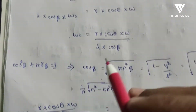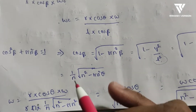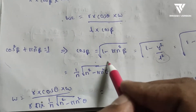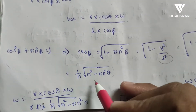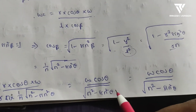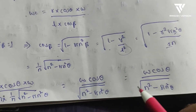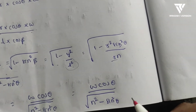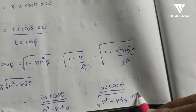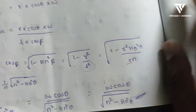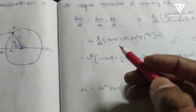Substituting this expression for cos β into the ω_c equation, we simplify to get the final formula for angular velocity of the connecting rod: ω_c = (ω·cos θ) / √(n² − sin²θ).